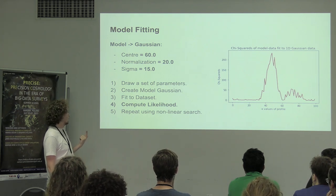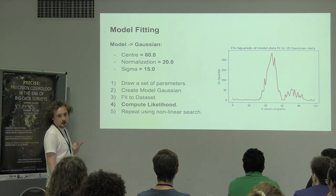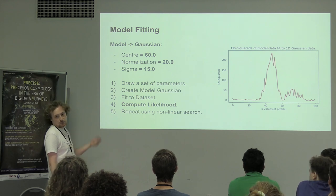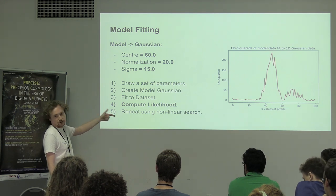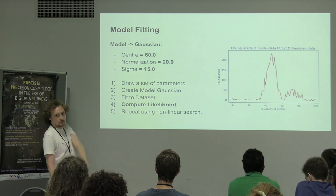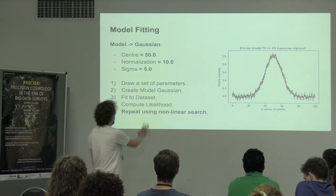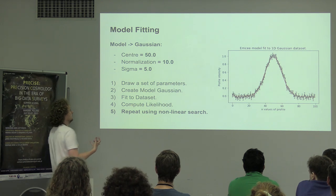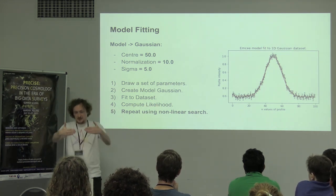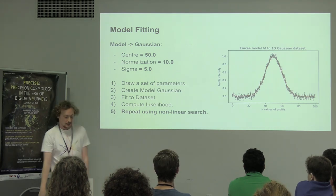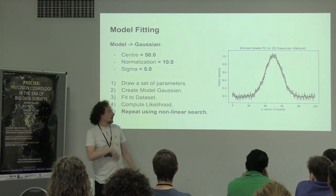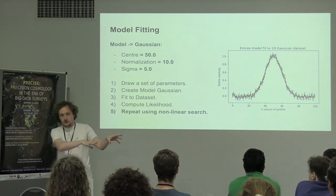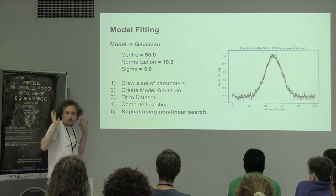In model fitting, you basically repeat this process thousands of times — potentially tens of thousands of times — using something called a non-linear search, which will be introduced in the session. This approach has a strategy: if a previous guess gave a good fit, it guesses things closer to that. By repeating this process thousands of times, you will hopefully eventually land on a solution — a set of parameters that fit the data. By the end of the session you should have a clear idea of how you could swap in the data relevant to your own astronomy and begin doing some toy model fits for a problem that's actually relevant to you.